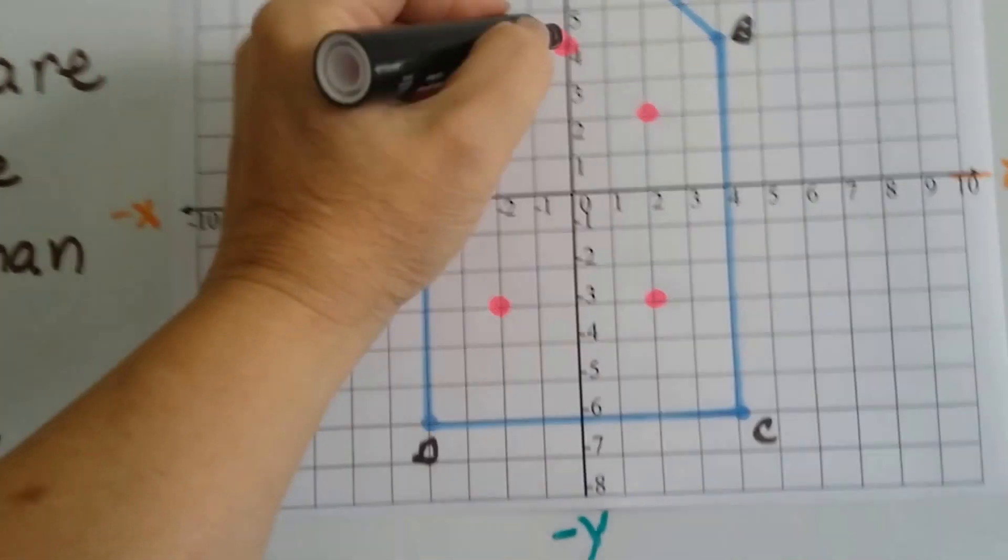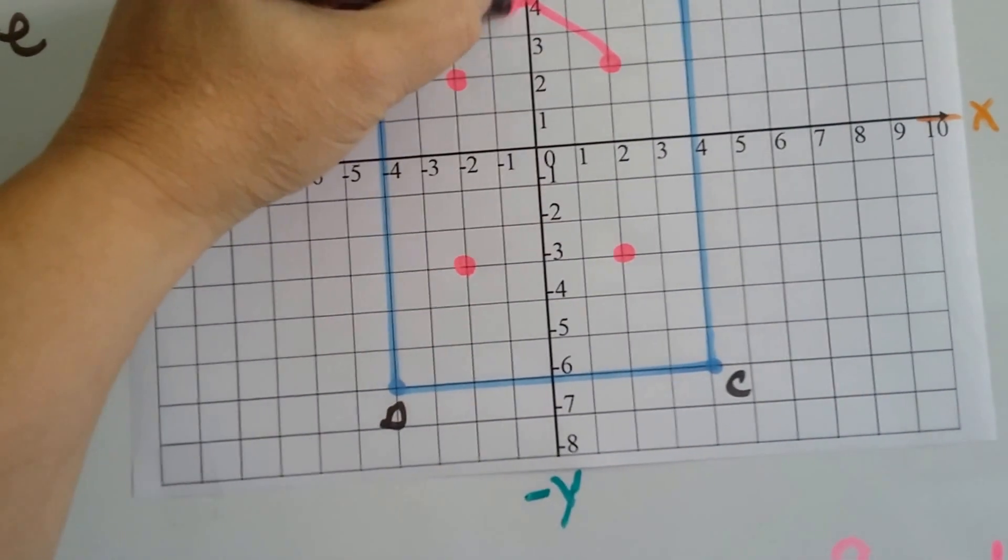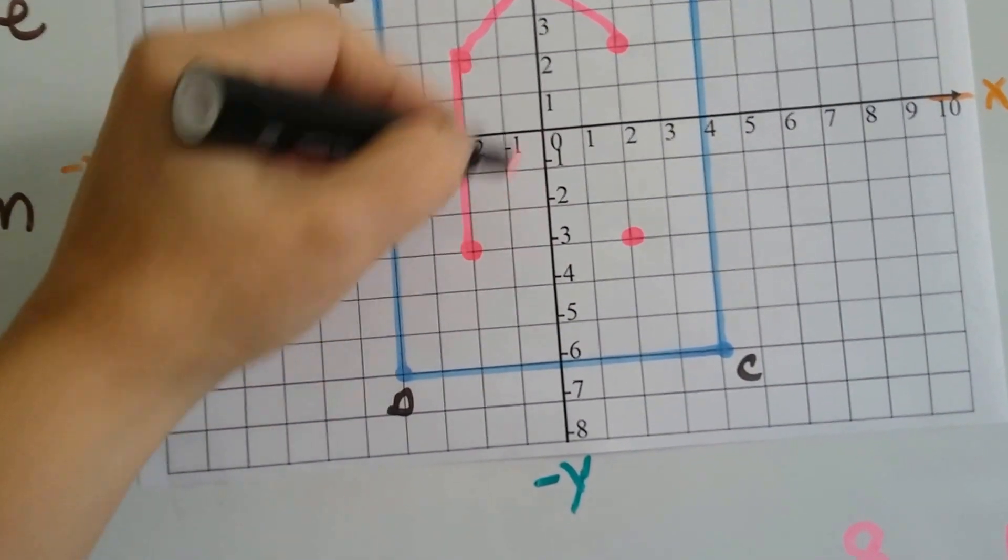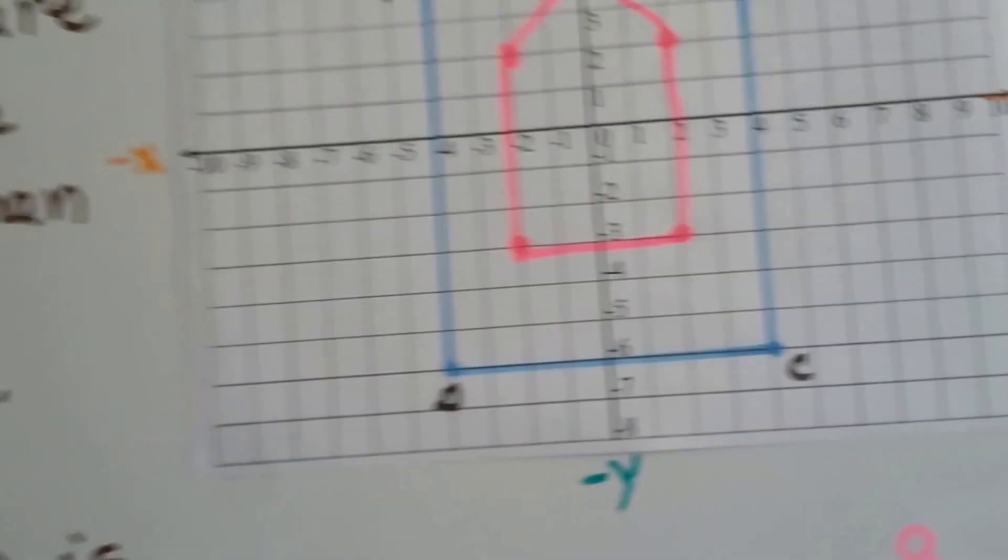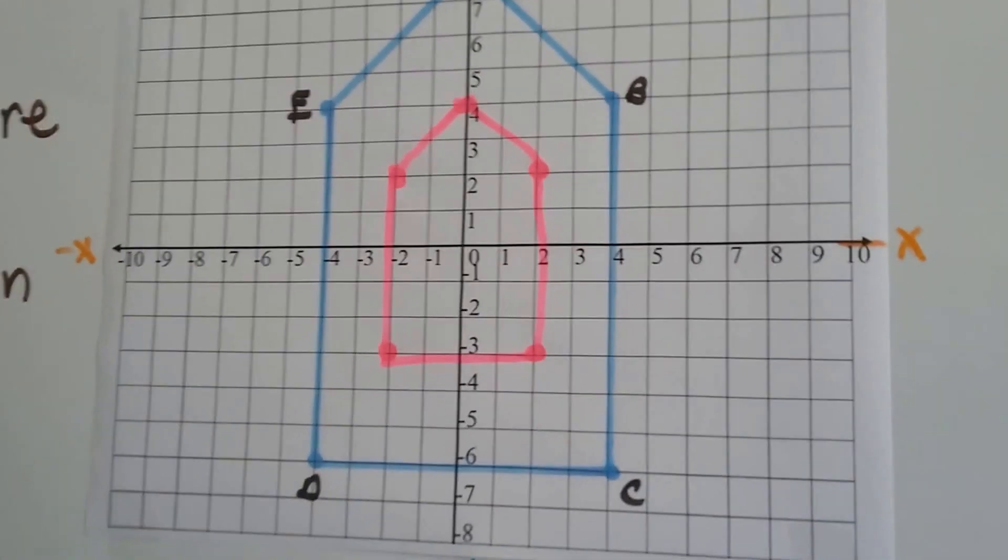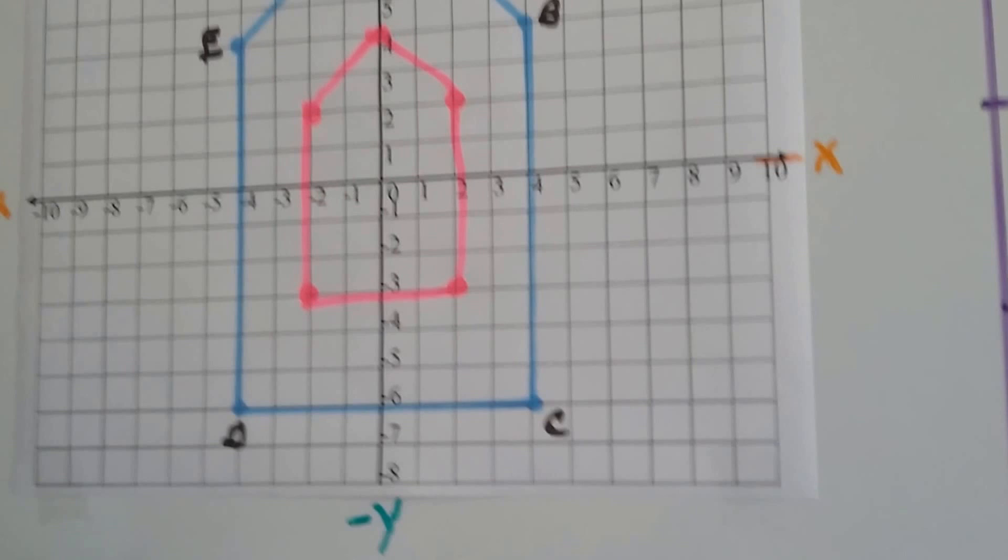So that's going to be our new shape. And we can connect these lines, can't we? See? It's not as neat when you don't use the edge of a ruler. But now we've got our new coordinates. We've plotted it.